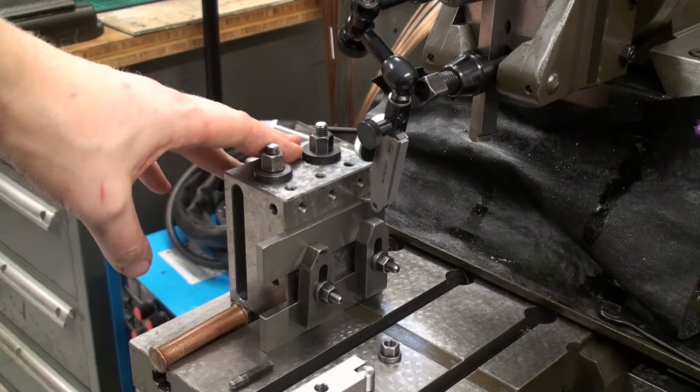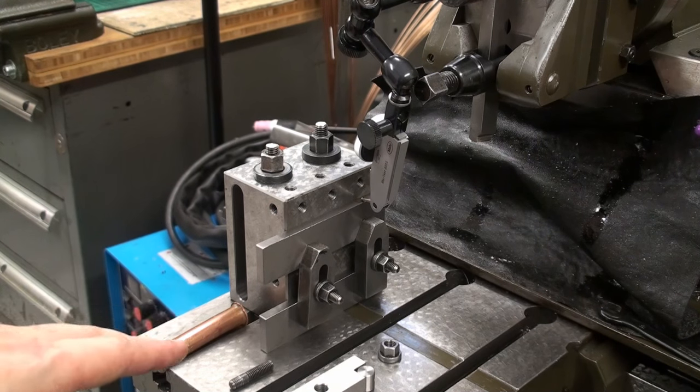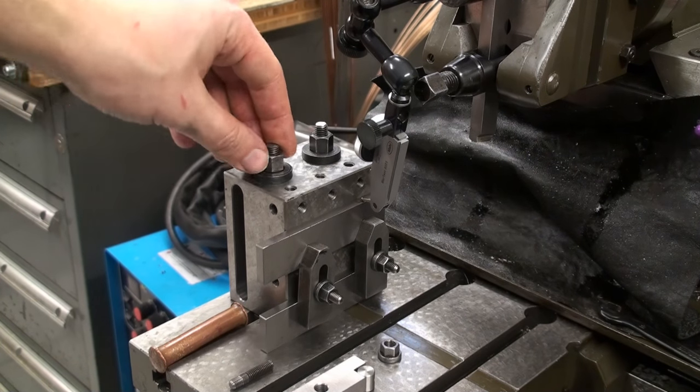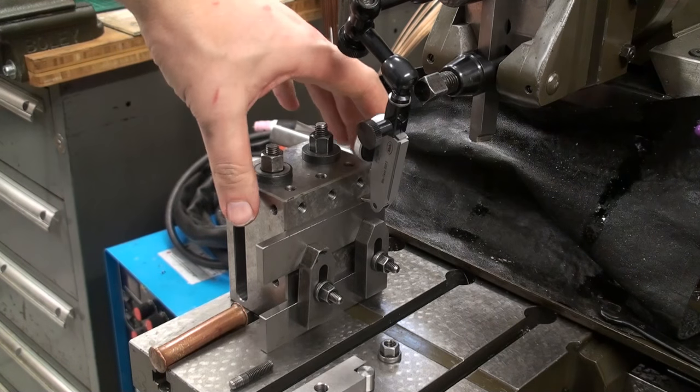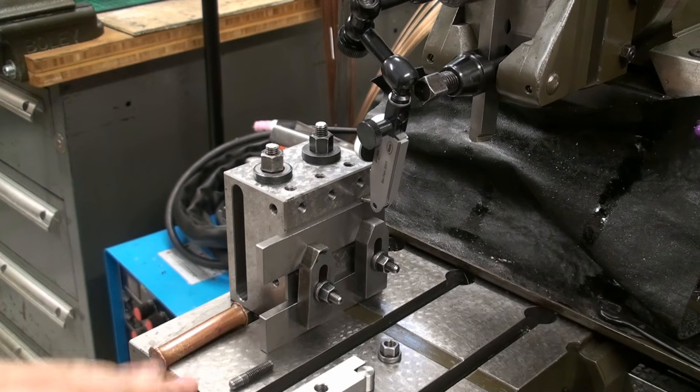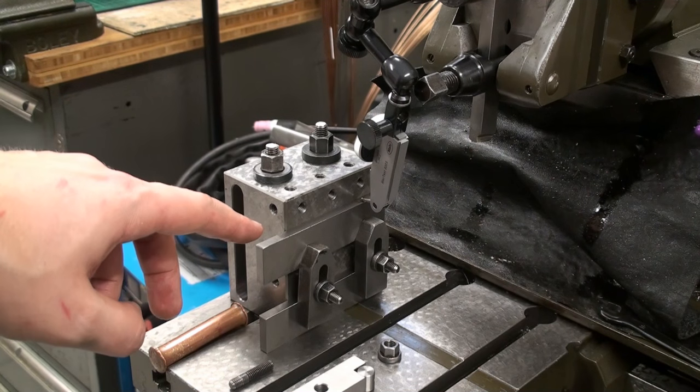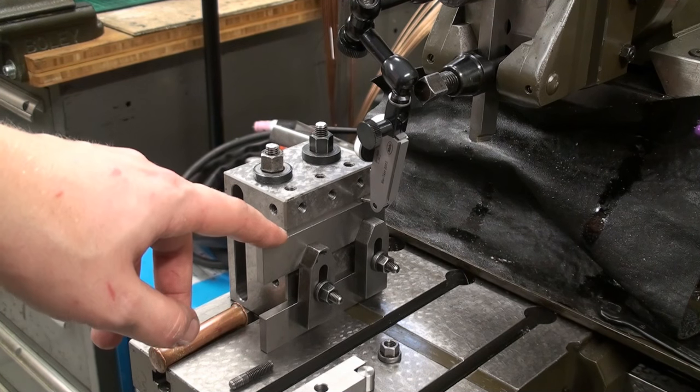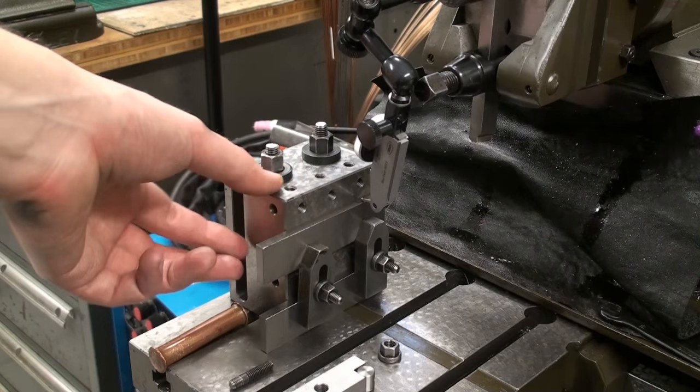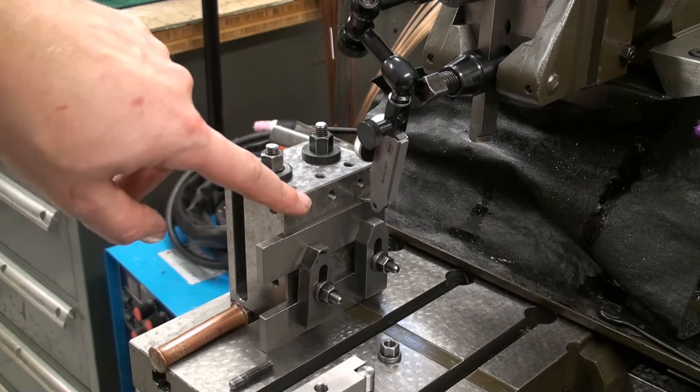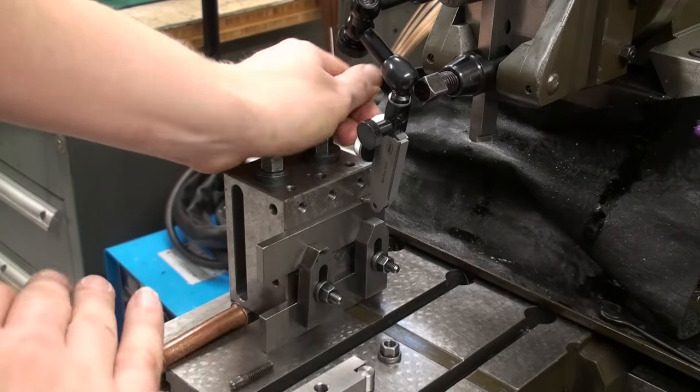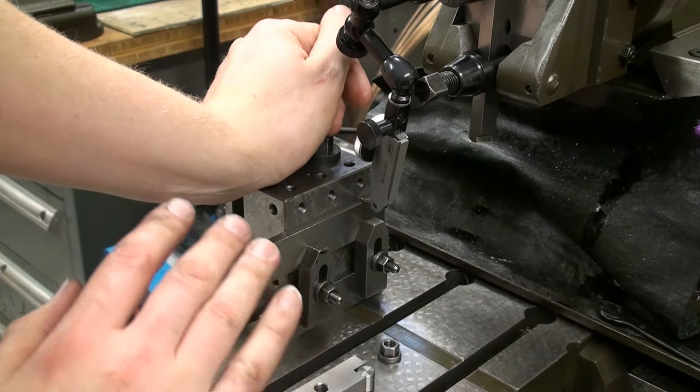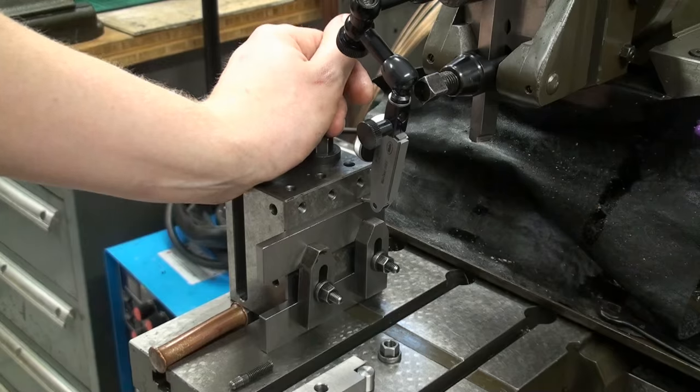This is the setup on the shaper. I removed the vice from the table and I bolted my scraped toolmakers block on the table. Now I took a parallel and I clamped it against the face of the toolmakers block, and I'm indicating it in so it's absolutely level to the travel of the machine.